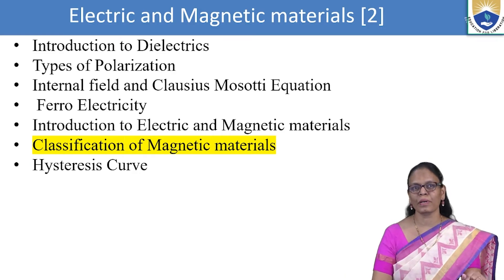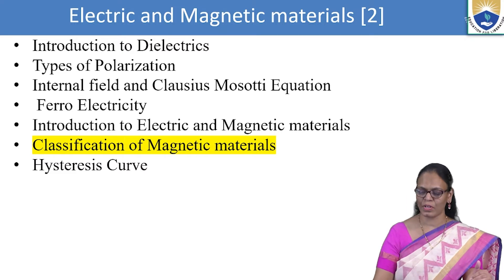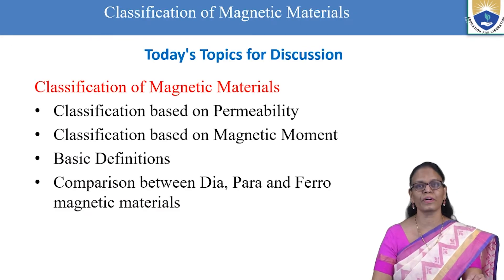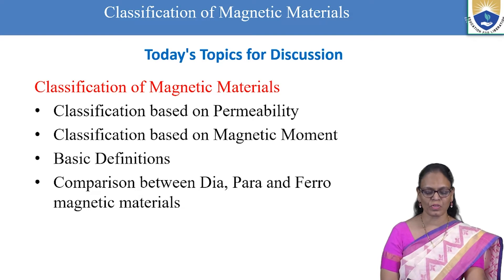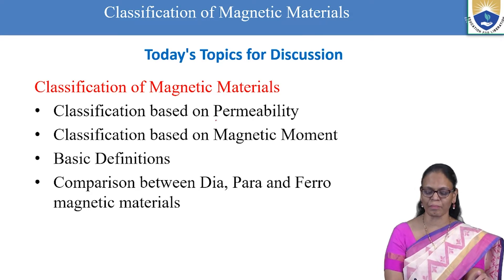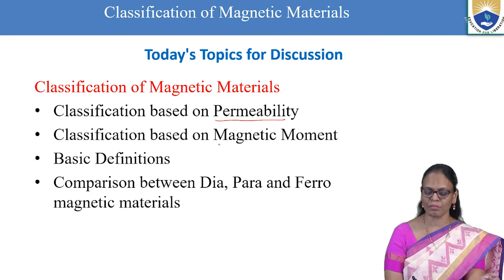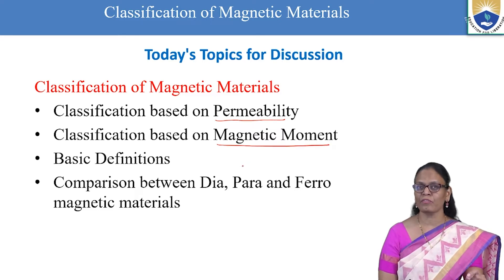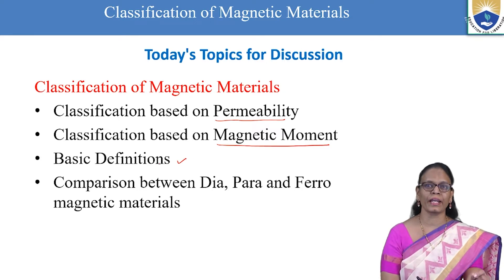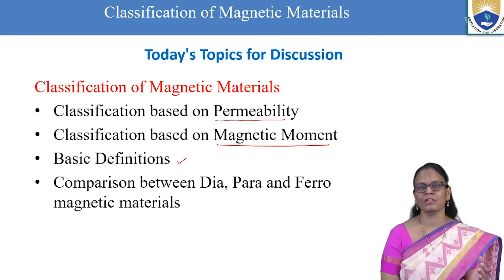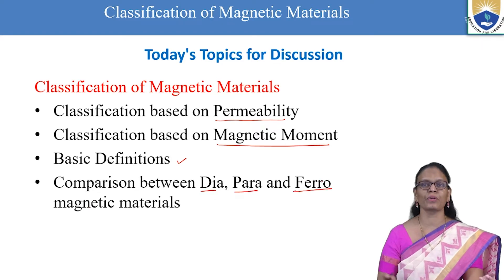This will be the last topic in the magnetic materials which we have been discussing. Let us see the brief outline: first we will see the classification based on permeability, then based on magnetic moment. We need some basic definitions to understand these classifications, and then we will do the comparison between diamagnetic, paramagnetic, and ferromagnetic materials.